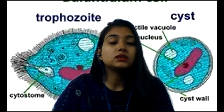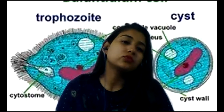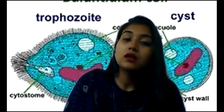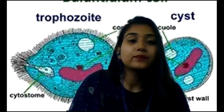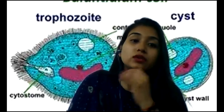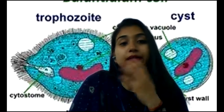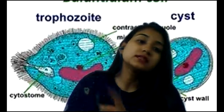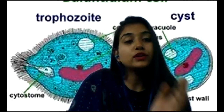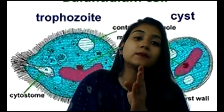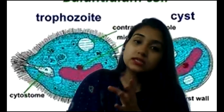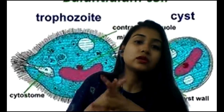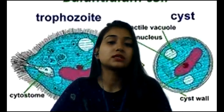Key points to remember — Trophozoite: ovoid shape with pointed anterior end, size 30 to 300 micrometers long by 30 to 200 micrometers wide, surface covered with cilia, non-infective, reproduction by binary fission or conjugation, nuclei include macronucleus and micronucleus. Cyst: spherical shape, size 40 to 68 micrometers, surface covered with thick cyst wall, infective and non-reproductive, nuclei include macronucleus and micronucleus.